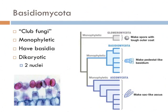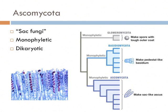Basidiomycetes are also known as club fungi, and they do form a monophyletic group, all of which have basidia — those are the pedestal things on which the sporangia sit. They're also dicaryotic, meaning that they have two nuclei. The interpretation of this group of fungi all stems from a common ancestor that must have had a basidium and two nuclei. The ascomycetes are also monophyletic — also known as the sac fungi, they all have a sac that is directly connected to the hyphae, and these species are also dicaryotic, meaning that they have two nuclei. So the interpretation is that the ascus evolved once, and all the ascomycetes stemmed from that common ancestor.